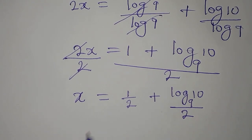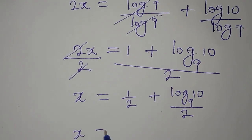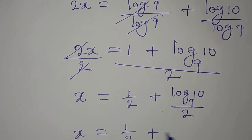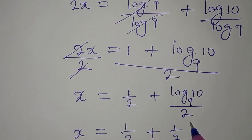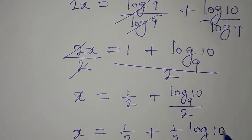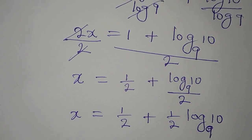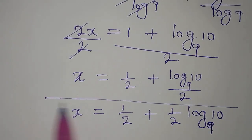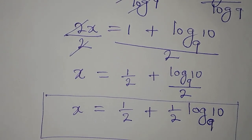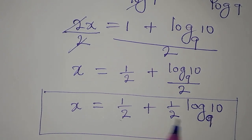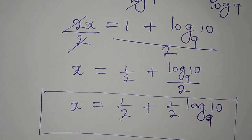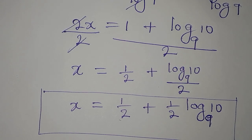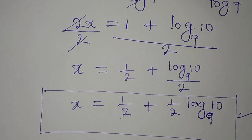We can write this as x equals 1 over 2 plus 1 over 2 times log 10 to base 9, because 1 over 2 times any number is that number divided by 2. From here we have the value of x, and we can factor out 1 over 2 as a common factor.